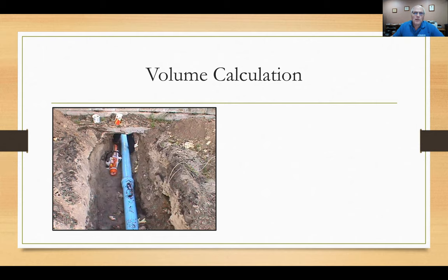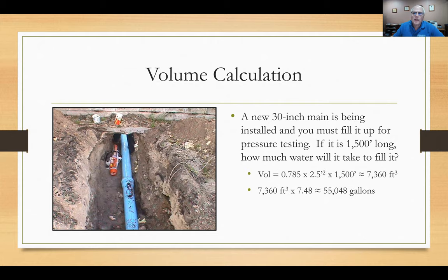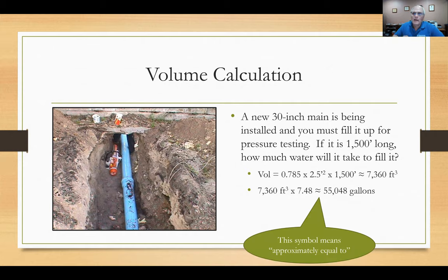Here's another volume calculation: installing a new 30-inch main, 1,500 feet long, and you need to fill it for pressure testing. Volume = 0.785 × diameter squared × 1,500 feet ≈ 7,360 cubic feet. Multiply by 7.48 to get approximately 55,048 gallons. Note the wavy line symbol (≈) means approximately equal to — it means I rounded somewhere. Straight lines mean exactly equal; the wavy line means approximately.